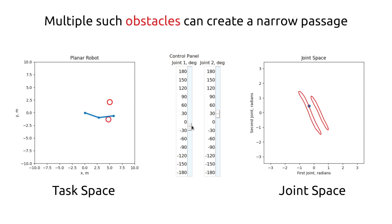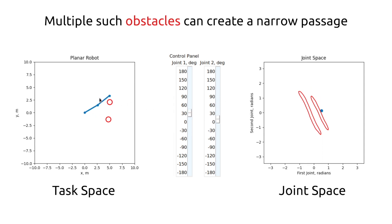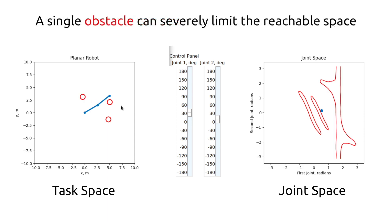Two such obstacles can create a narrow passage in joint space, requiring the robot to retract one of its links to navigate out of the collided situation. Obstacles placed in a certain way may even render part of the joint space unreachable, meaning that the robot cannot reach this region without falling into collision.